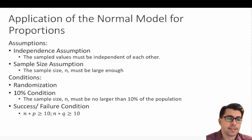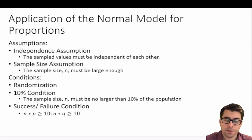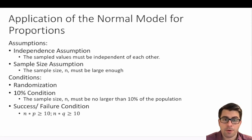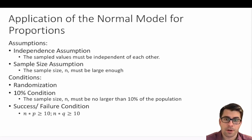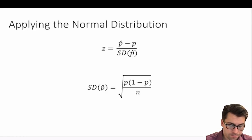The success-failure condition requires that n times p must be greater than or equal to 10, and n times q must be greater than or equal to 10. So our sample size times our probability of success must be greater than 10, and our sample size times our probability of failure must be greater than or equal to 10.